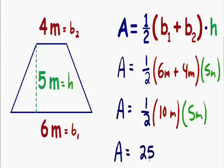We can't forget about our units. Since area is always expressed in square units — such as square feet, square yards, or square inches — and we're given meters in this example, our units are going to be square meters. So the area of this trapezoid is equal to twenty-five square meters.